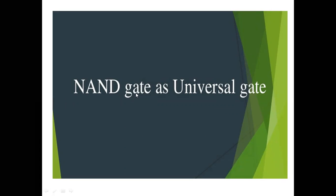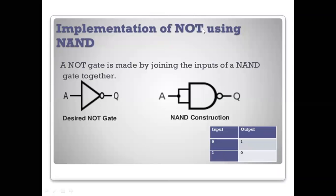First, we study NAND gate as a universal gate: implementation of NOT gate using NAND gate. NOT gate performs inversion: input 0 gives output 1, input 1 gives output 0. NOT gate is made by joining both inputs of a NAND gate together, giving a single input.